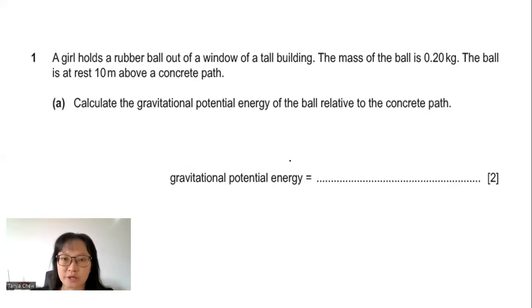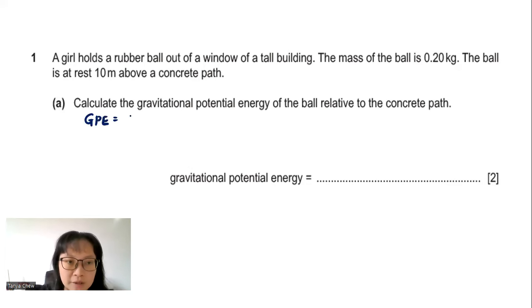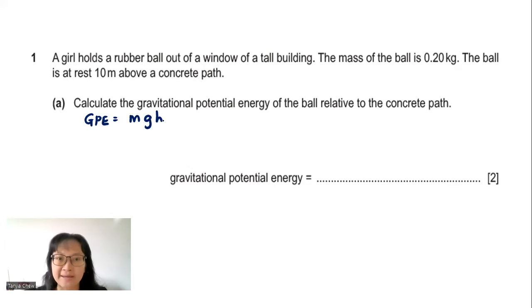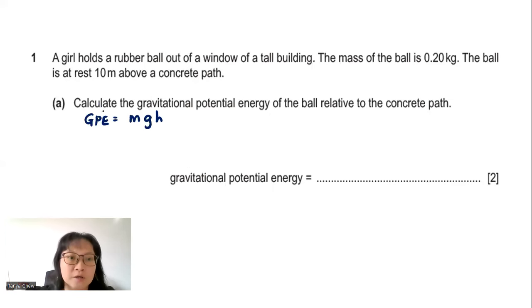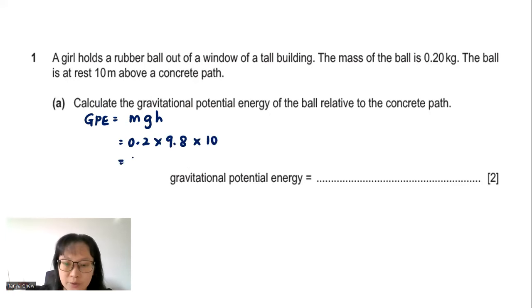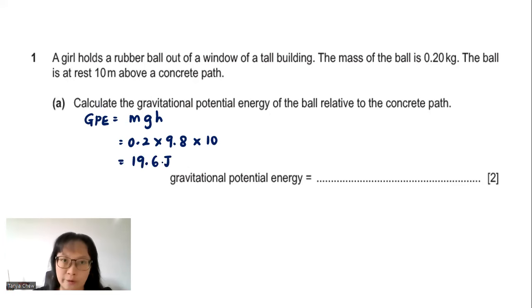Gravitational potential energy, or GPE, can be calculated using GPE = mgh, where m is the mass, g is gravitational acceleration, and h is the height above the ground or concrete path. The mass is 0.2 kg, g is 9.8, and the height is 10 m. The answer is 19.6 joules.